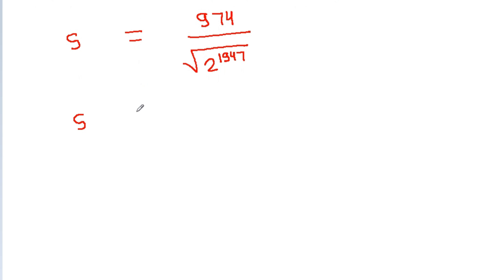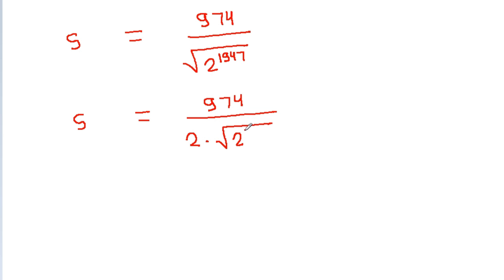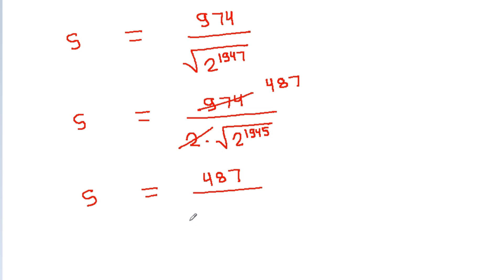Since the square root of 2^1947 equals 2 times the square root of 2^1945, and 2 times 974 equals 1948, we get S equals 974 divided by the square root of 2^1945. This is the value of S.